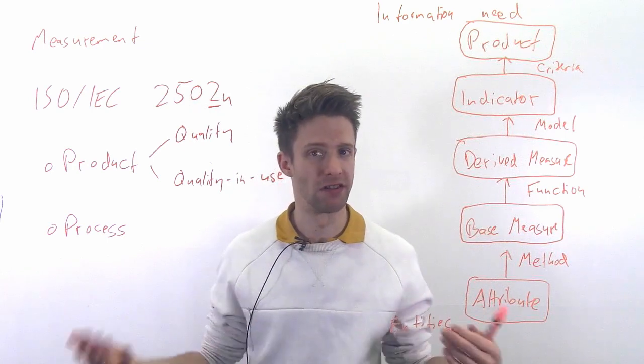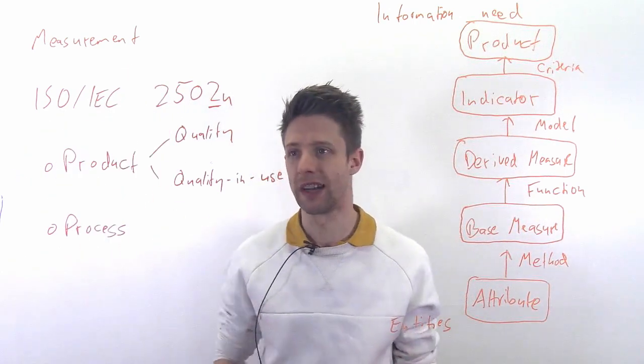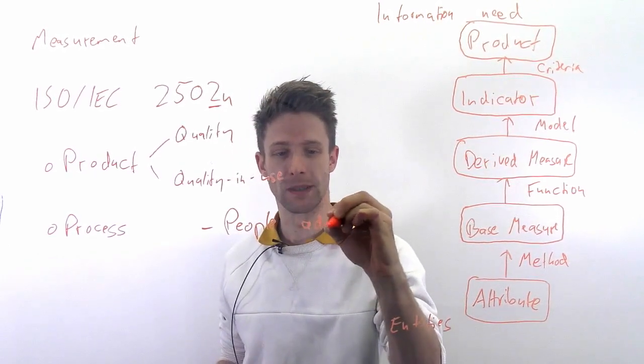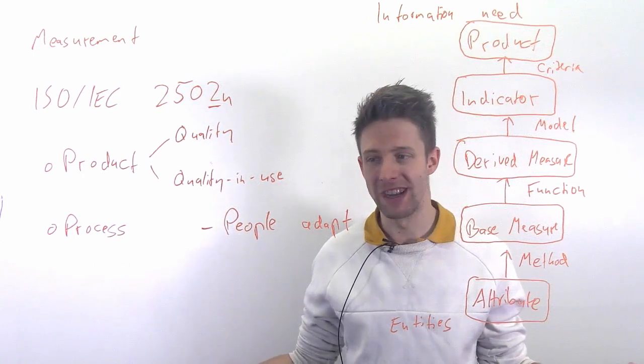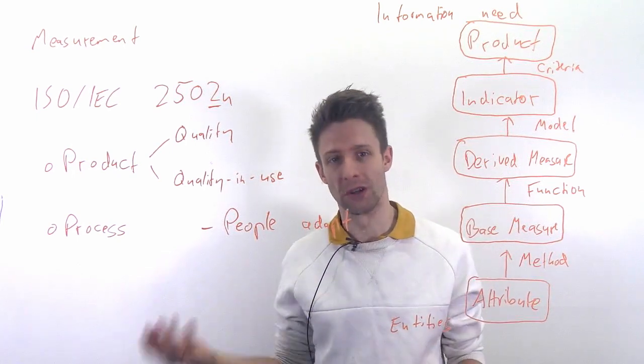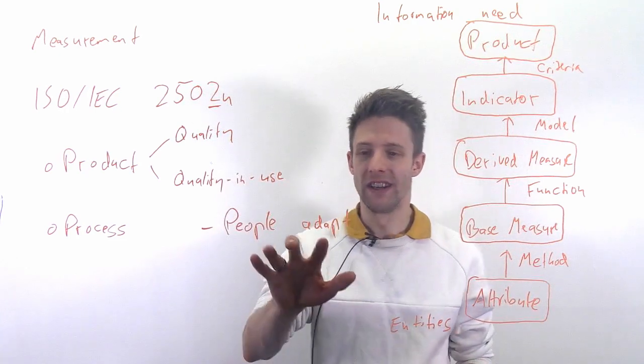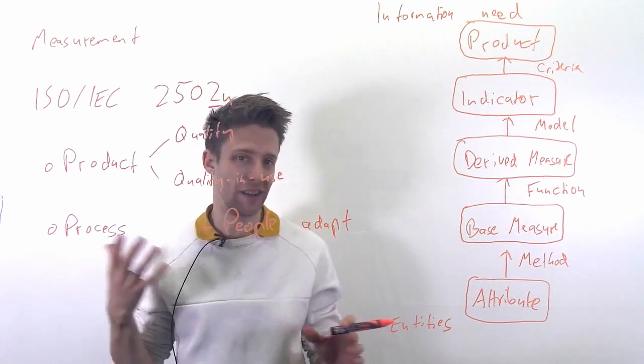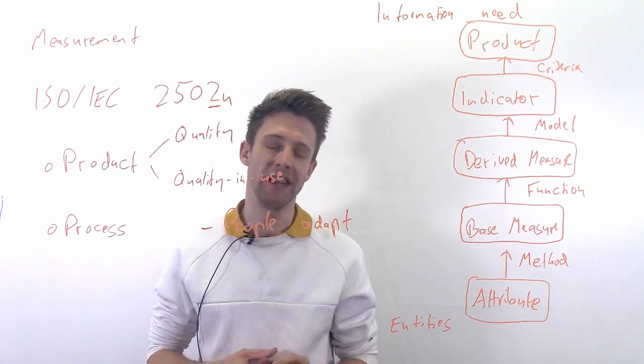Here you have a function in the mathematical sense, combining number of base measures - for example, lines of code divided by number of bugs, so mathematical function. Here you have some kind of analysis model, for example the traffic light I've given you - more than a bug per hundred lines is red, for example. And then you basically have decision criteria here usually that lead to some kind of visualization or a product. So this is how you look at that. And the important thing is always that for one of the same information need, you can have a lot of different attributes or base measures that you might want to measure.